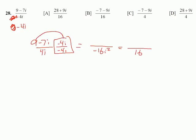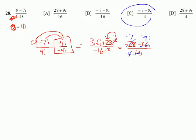In the denominator: 4i times negative 4i is negative 16i squared, and i squared is negative 1, so negative 1 times negative 16 gives us 16. On top, using the distributive property: negative 4i times 9 is negative 36i, and negative 4i times negative 7i is plus 28i squared. The i squared becomes negative 1, changing the sign: that's negative 28. So we have negative 28 minus 36i over 16. Dividing by 4: negative 7 minus 9i over 4 — letter C.